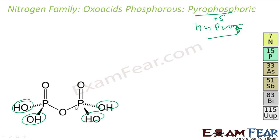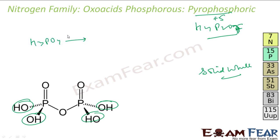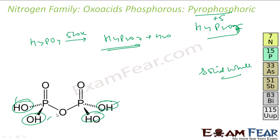It is a white solid. To prepare it, you can heat H3PO4 at 520 K to get H4P2O7 and some water. It is tetraprotic because it has four OH groups — to determine the protic level, you need to draw the structure.